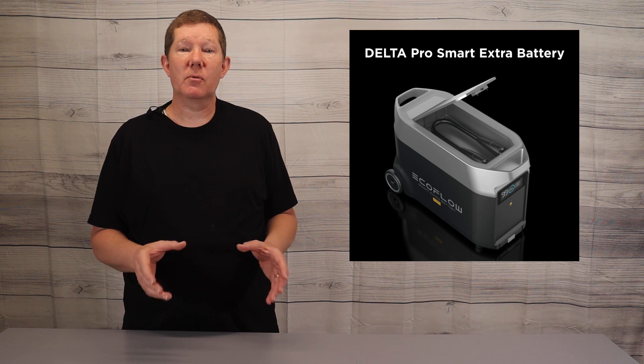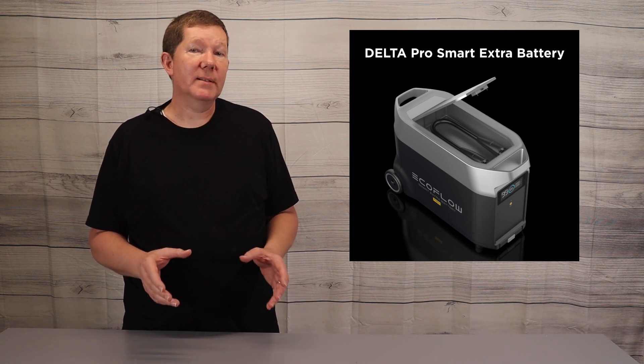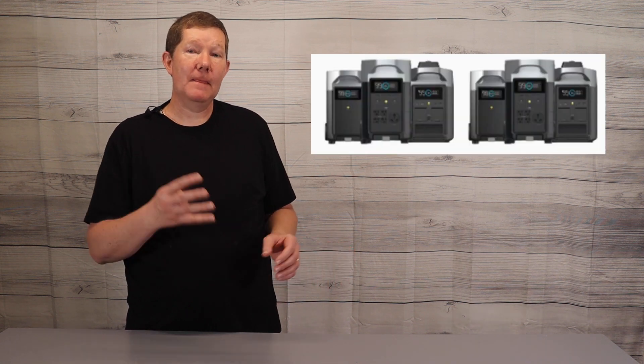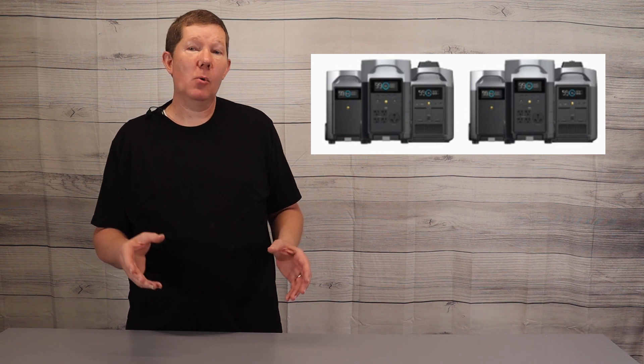The next component that I purchased is the Delta Pro Smart Extra Battery. This battery is also 3.6 kilowatts in capacity and it connects to the Delta Pro, which is the main unit, for a total of 7.2 kilowatt hours. Now remember, you can expand this system further. You can add up to two extra batteries per main unit, which is the Delta Pro. You can connect two Delta Pros and then a total of four extra batteries, which is going to give you a whopping 21 kilowatts of capacity.